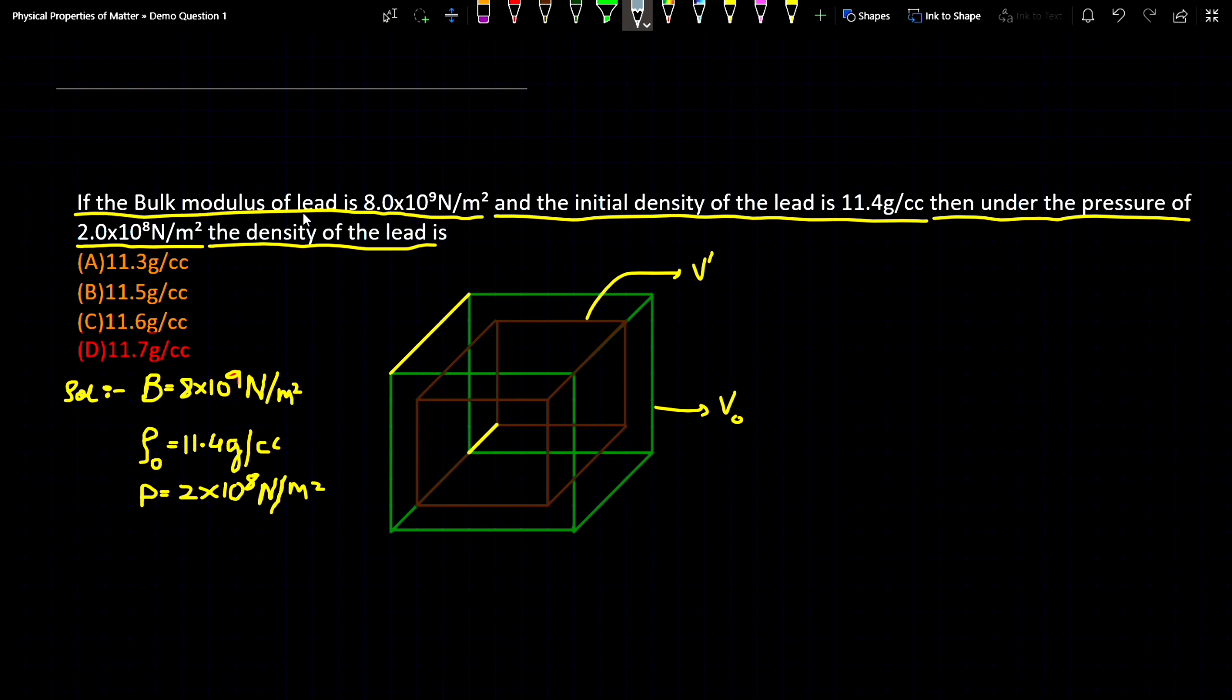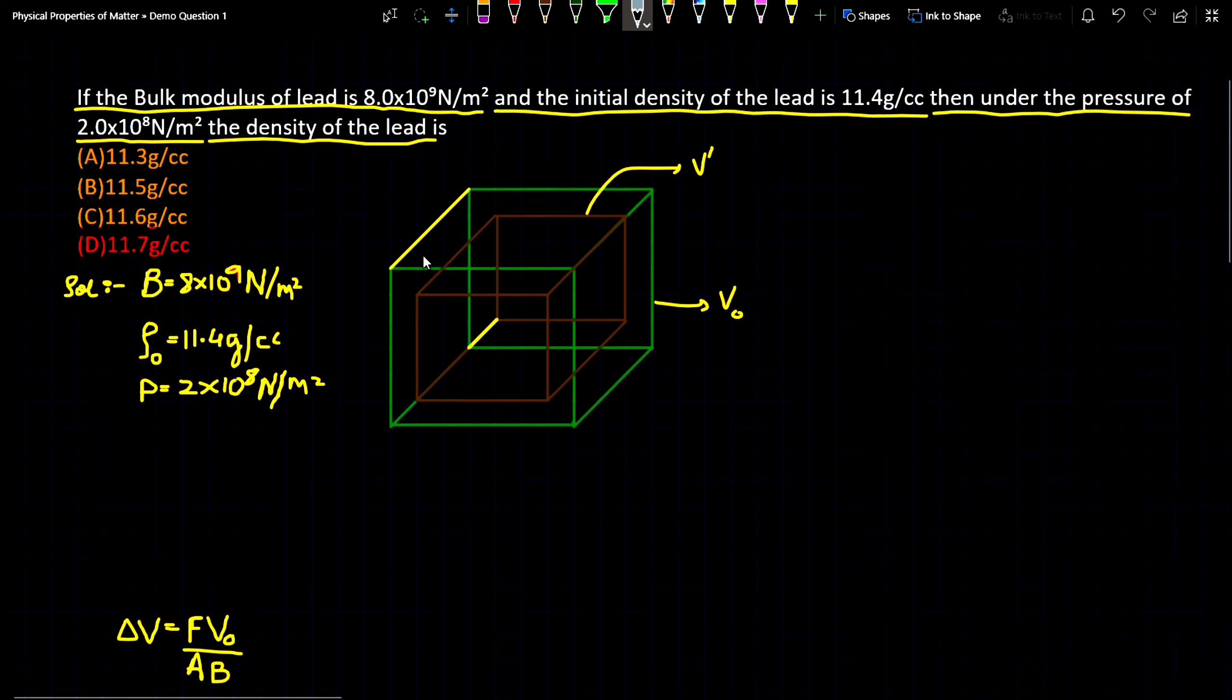The bulk modulus of lead is 8×10⁹ N/m² and the initial density of the lead is 11.4 g/cm³. Then under the pressure of 2×10⁸ N/m², the density of the lead is?